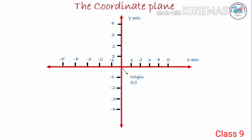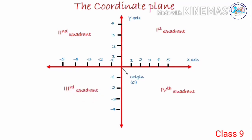Whenever this axis comes into the plane, the plane is divided into four parts: first part, second part, third part, and the fourth part. Each part is called a quadrant. This one is the first quadrant, second quadrant is here, the third quadrant is here, and the fourth quadrant is this one.